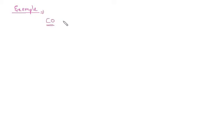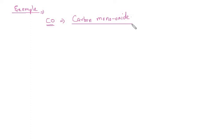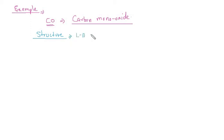Let's have the first example: carbon monoxide. This compound is called carbon monoxide, and it is a gas responsible for global warming. Let's draw its structure using the Lewis dot structure.